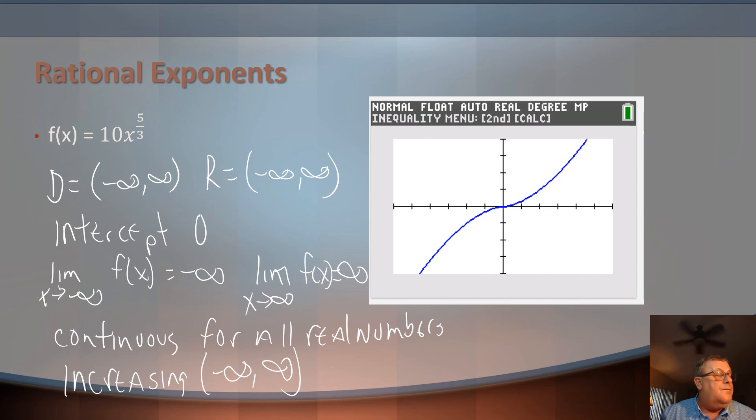So there we go. There's a preview of rational exponents, analyzing them as to domain, range, intercept, end behavior, continuity, and whether it's increasing or decreasing.